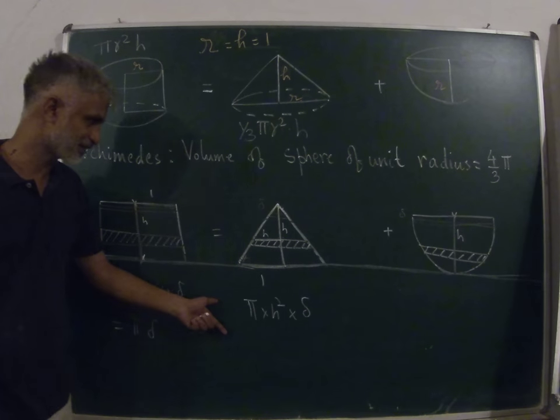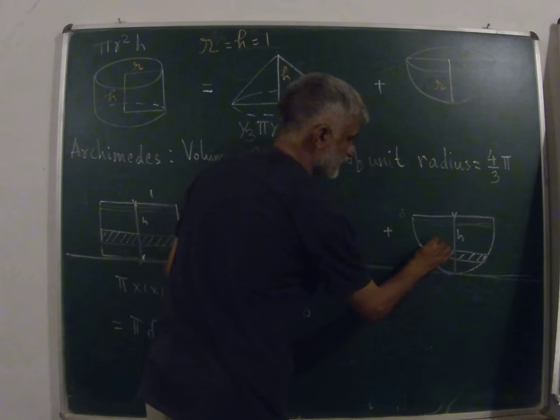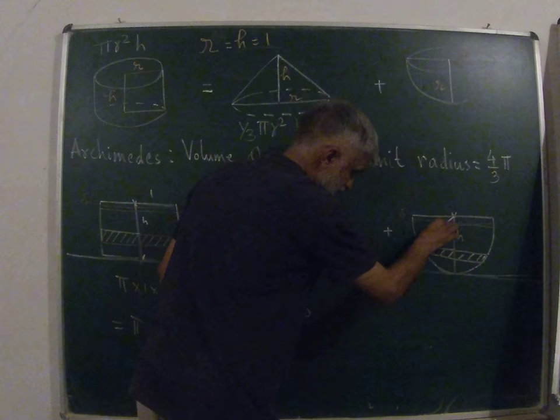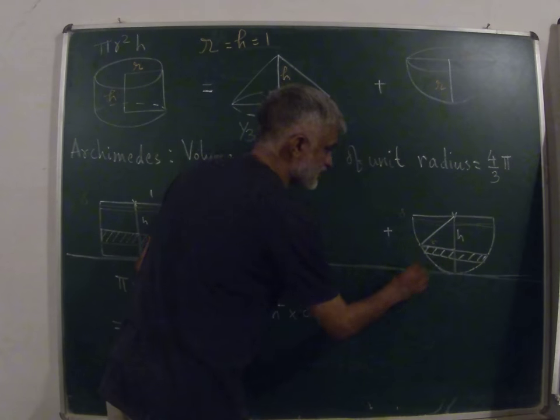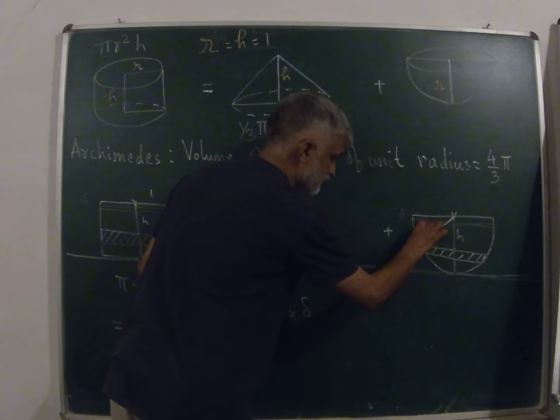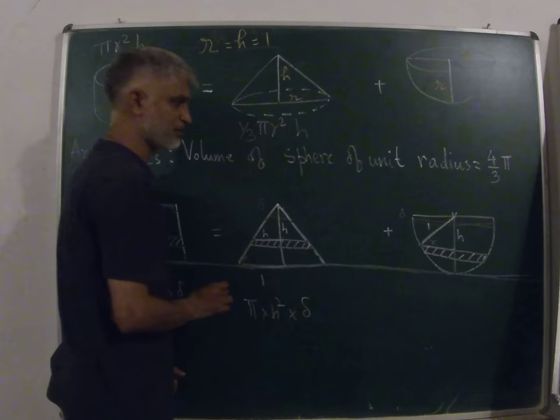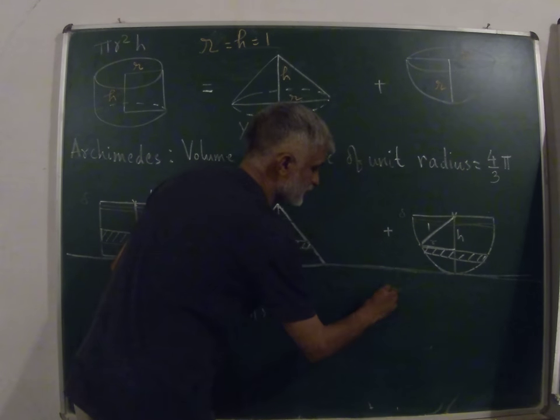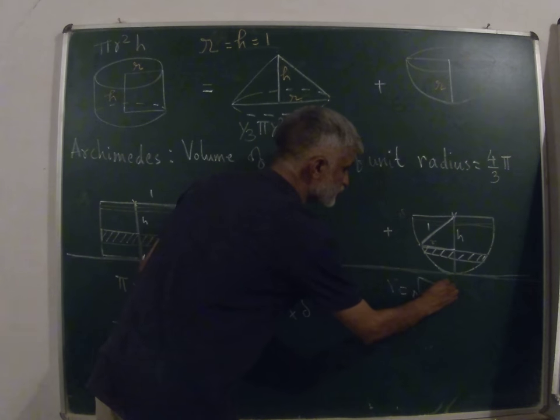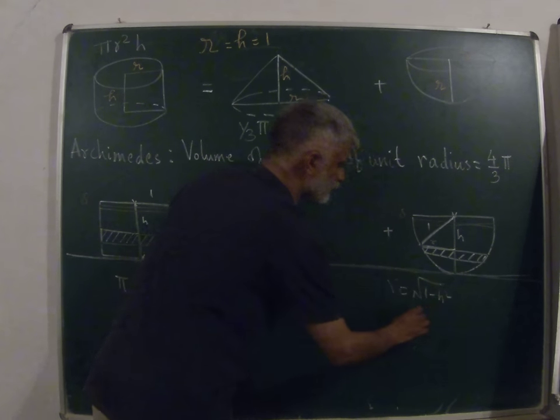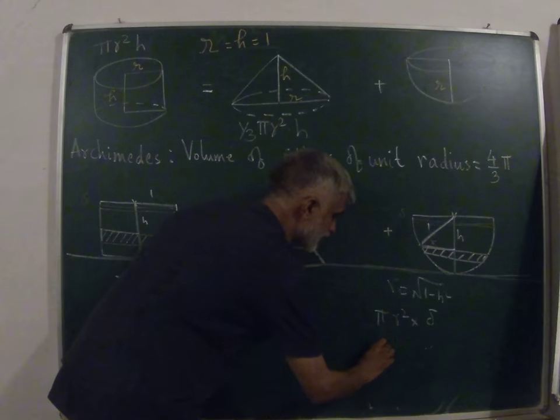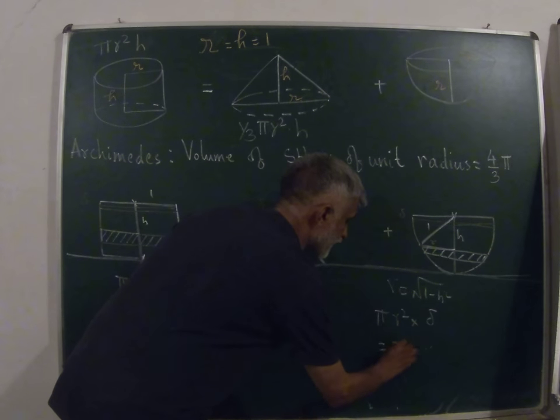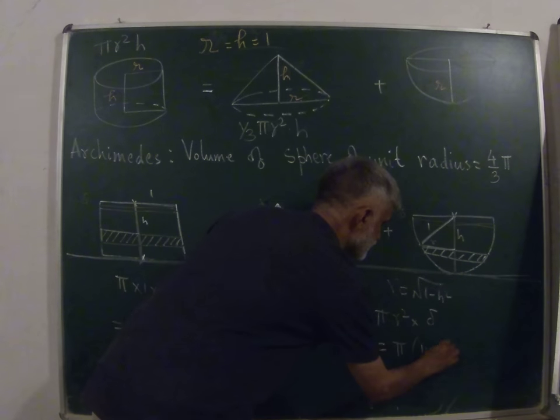The calculations are very straightforward. Now I just need to know what is the radius of this disk. Here at a height h, that is very simple thanks to Pythagoras' theorem, one of our favorite theorems. This is one and the radius of the hemisphere is one, so the radius of this disk is simply going to be √(1 - h²). What we are looking for is πr² into thickness which is delta, and that is equal to π(1 - h²)δ.